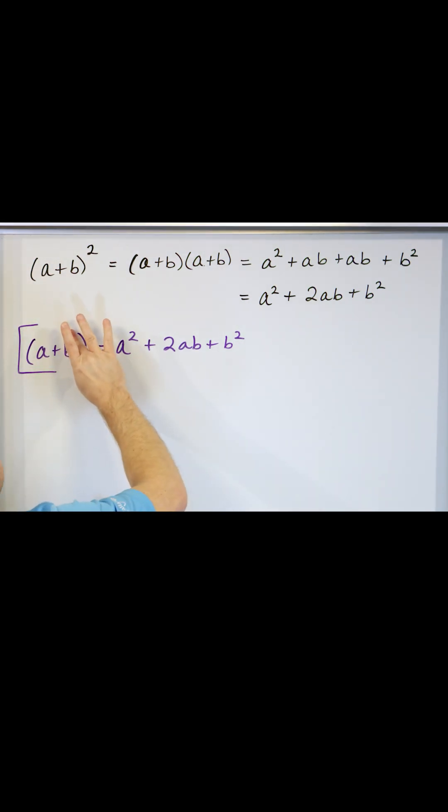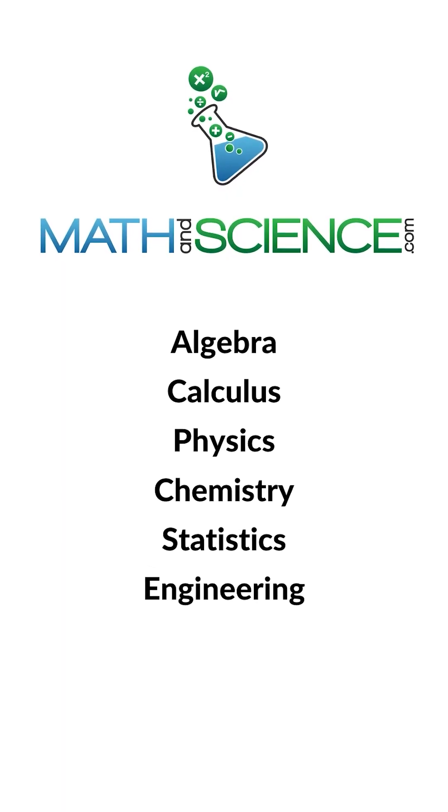This is something, whoops, I wrote this down wrong. It's a plus b inside the parentheses. The entire quantity is squared on the outside. Learn anything at mathandscience.com.